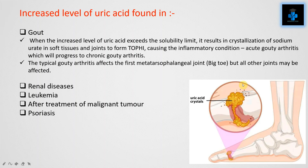Increased level of uric acid is found in gout. When the increased level of uric acid exceeds the solubility limit, it results in crystallization of sodium urate in soft tissues and joints to form tophi, causing the inflammatory condition acute gouty arthritis, which will progress to chronic gouty arthritis. The typical gouty arthritis affects the first metatarsophalangeal joint, but all other joints may be affected. Other reasons for increased uric acid include renal diseases, leukemia, treatment of malignant tumors, and psoriasis.